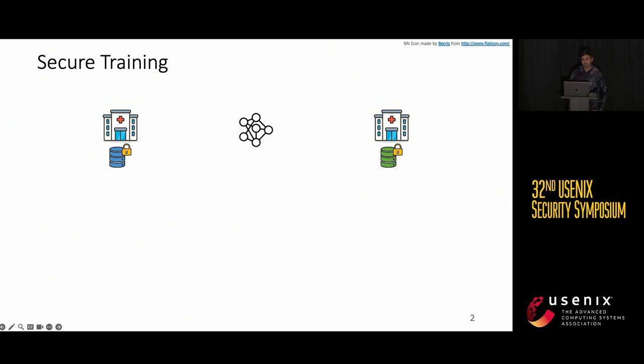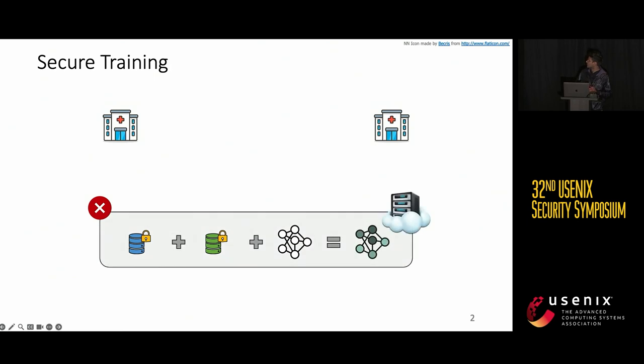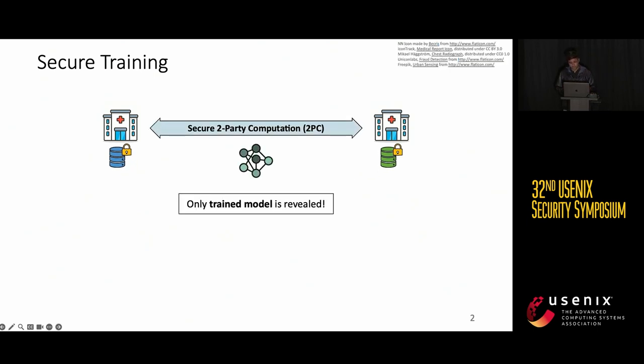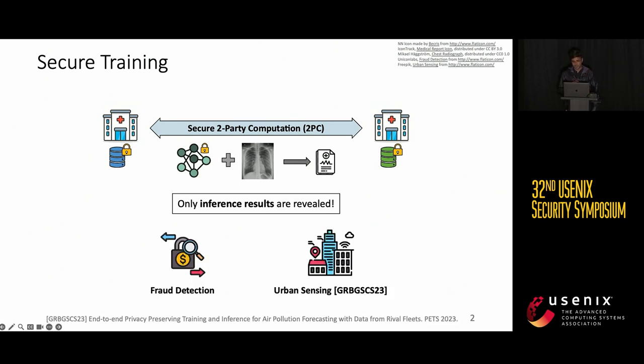I'll begin by explaining why secure training is needed with an example. Consider two healthcare providers, each with access to some sensitive patient data, and these providers want to put their resources together and train a machine learning model for disease prediction. Unfortunately, they can't do that because regulations just won't allow them to share their data. This is where secure training comes into the picture, and it enables these parties to achieve their goal through the use of secure two-party computation techniques. What it ensures is that only the trained model is revealed at the end of this protocol and nothing else about the secret data is leaked. If needed, secure training can also go a step further and even ensure that the secret model is kept private. You could think of other examples such as fraud detection and urban sensing.